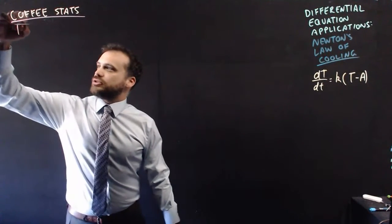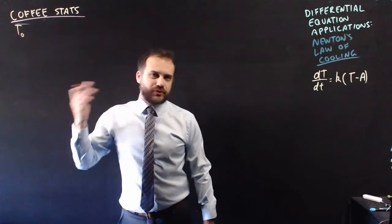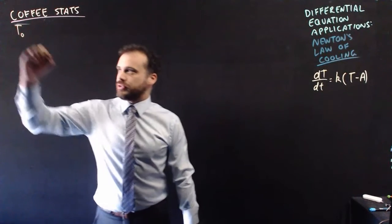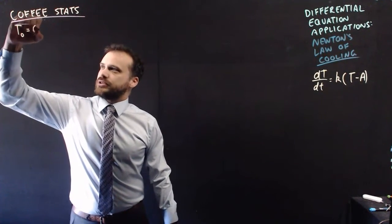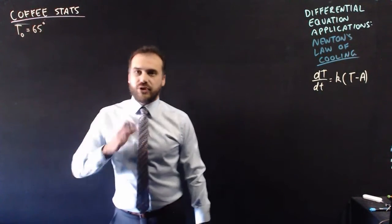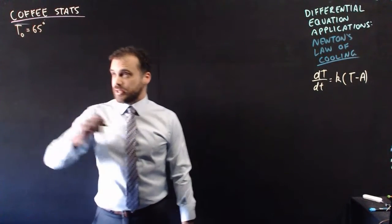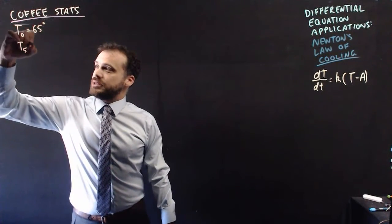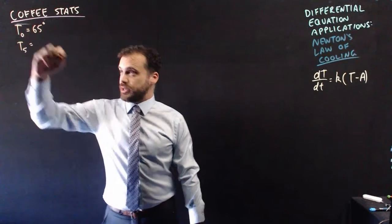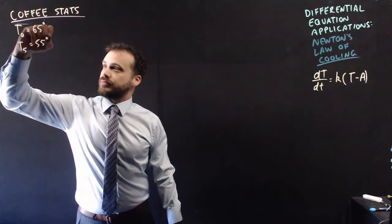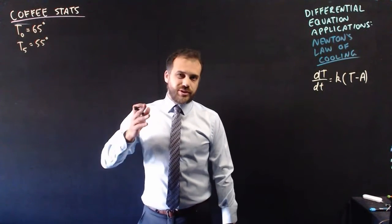Just put some stats down here and then we're going to solve the question that I give you. So the initial temperature of a good cup of coffee is between 60 and 65 degrees. That was a pretty good cup of coffee, so we're going to say it was 65 degrees. I'm going to tell you that after 5 minutes, the temperature had gone down to 55 degrees.